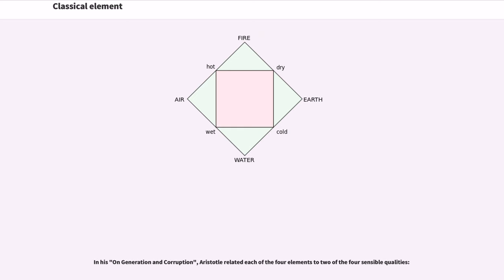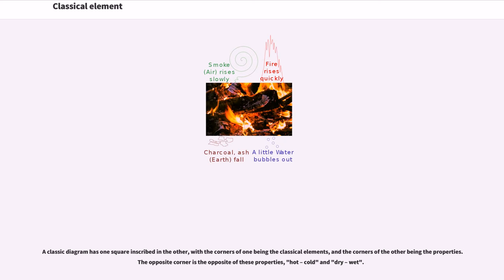In his On Generation and Corruption, Aristotle related each of the four elements to two of the four sensible qualities. A classic diagram has one square inscribed in the other, with the corners of one being the classical elements, and the corners of the other being the properties. The opposite corner is the opposite of these properties: hot, cold and dry, wet.